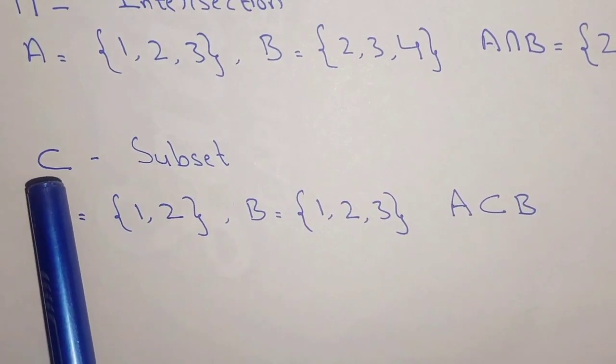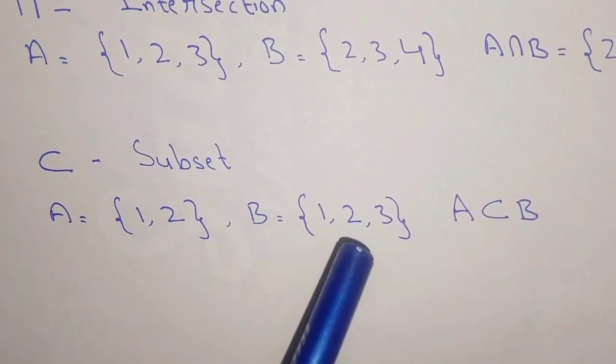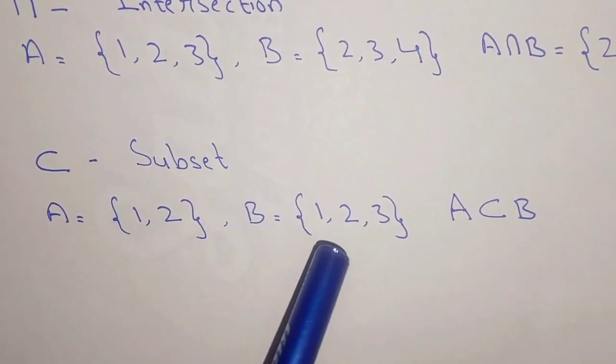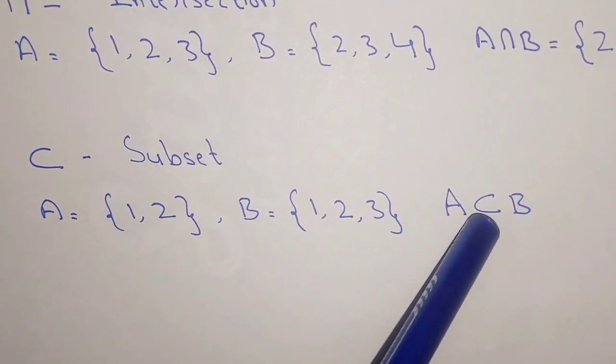Another notation is ⊂, which means subset. We can say that A is a subset of B if all the elements of set A are present in set B.